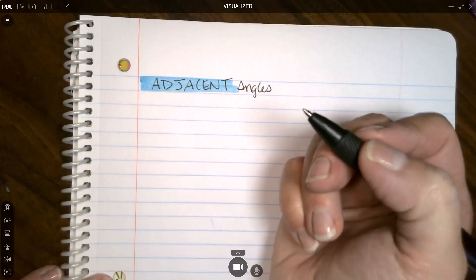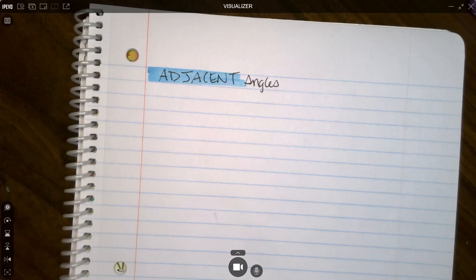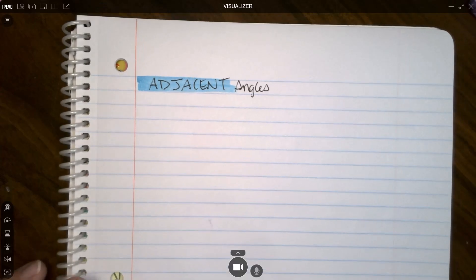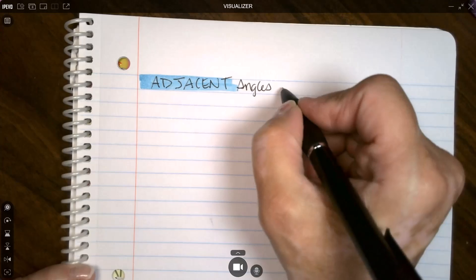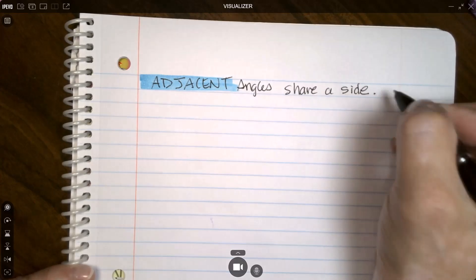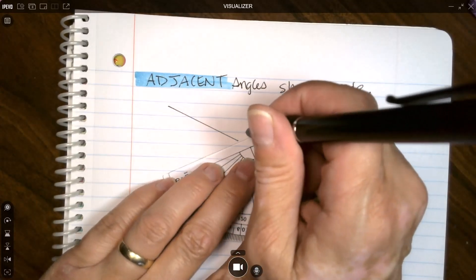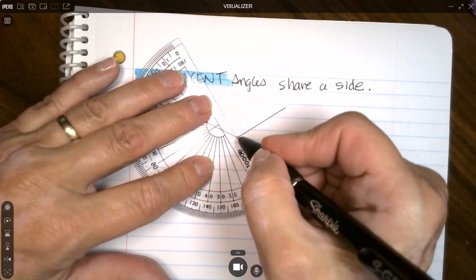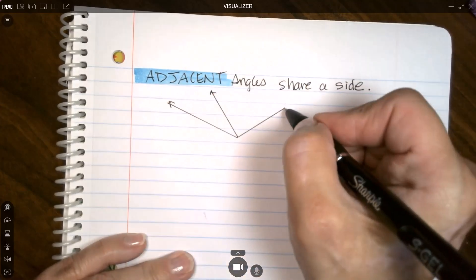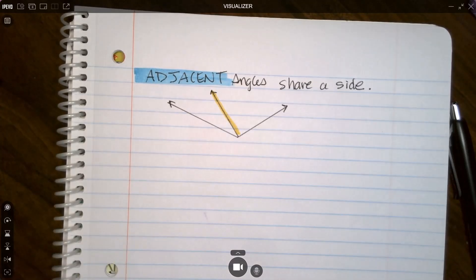Adjacent angles are next to each other. Adjacent, if you live in a house, there's a house next to you. Adjacent neighbors live next to each other. Adjacent angles live next to each other too. If I were going to draw adjacent angles, it would just be something that kind of looks like this. These are adjacent angles and they share this side. So complementary angles that are right next to each other can be adjacent. Supplementary angles that are right next to each other can be adjacent as well.